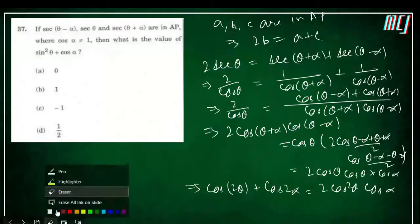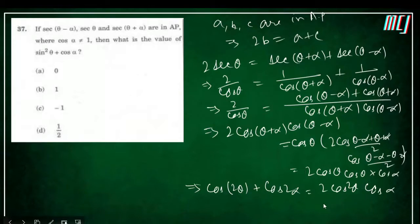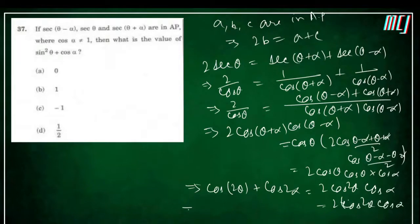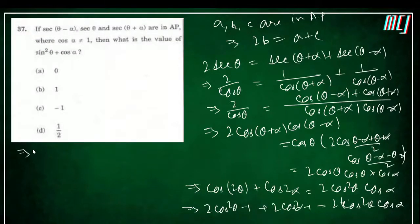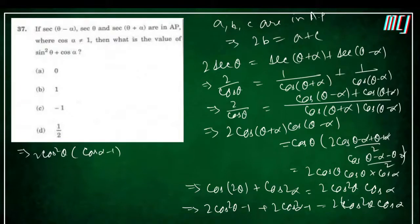Rearranging: 2cos²θ·(cosα − 1) = 2cos²α − 2. The 2s cancel on both sides, giving cos²θ·(cosα − 1) = cos²α − 1 = (cosα − 1)(cosα + 1). Therefore cos²θ = 1 + cosα.